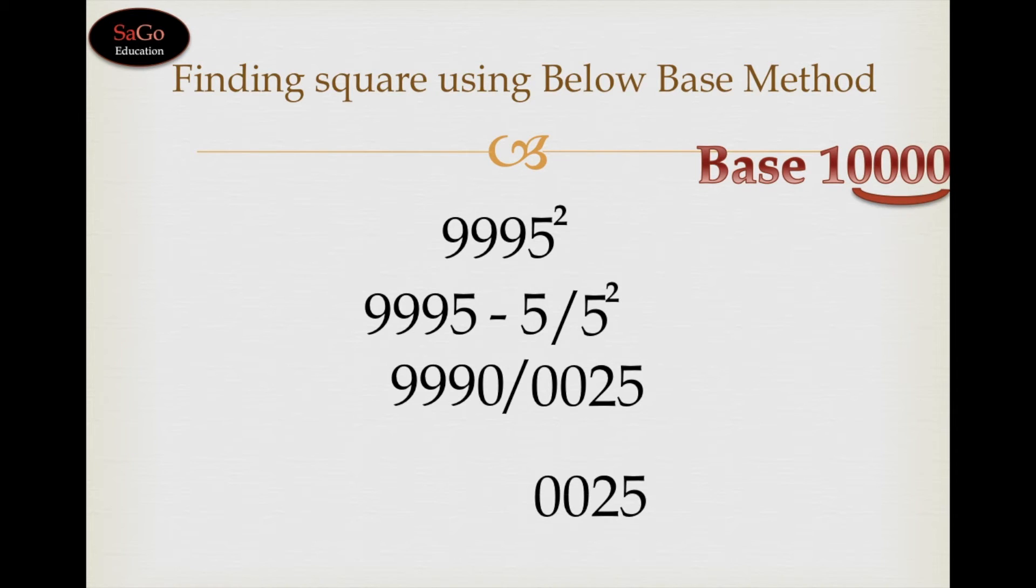Write down 0025 as it is and multiply 9990 by 1 because we are considering the base 10000 here. When we multiply 9990 by 1, it will remain the same. Our answer is 99900025.